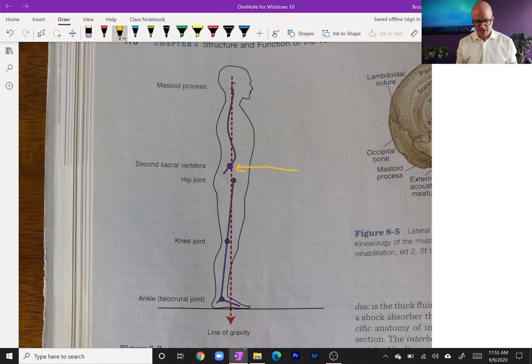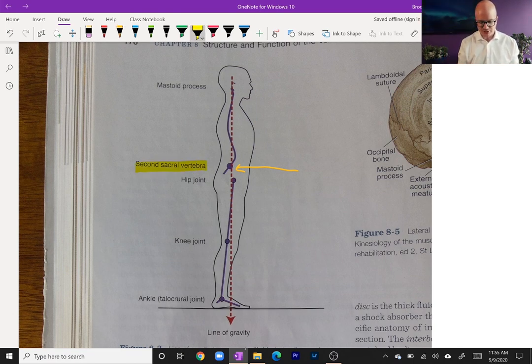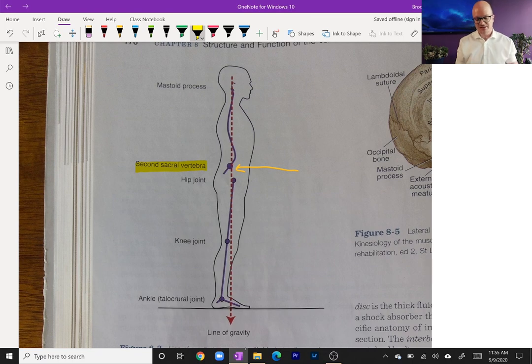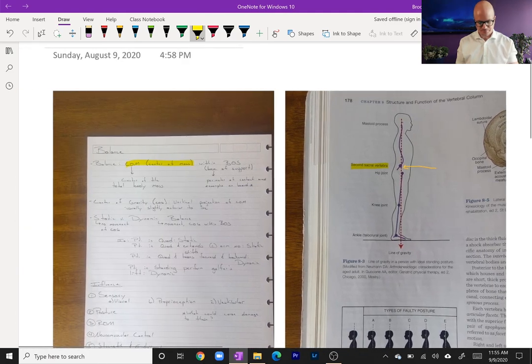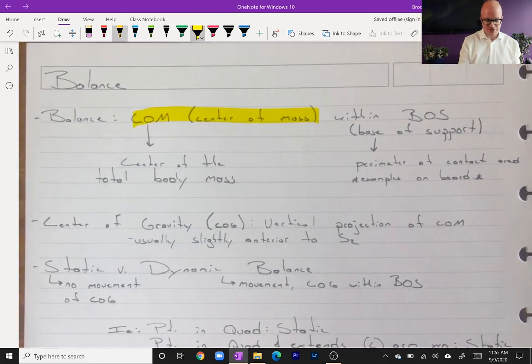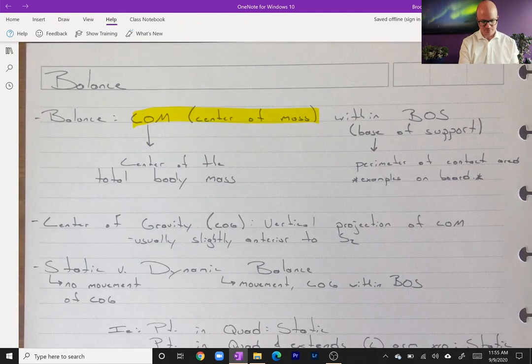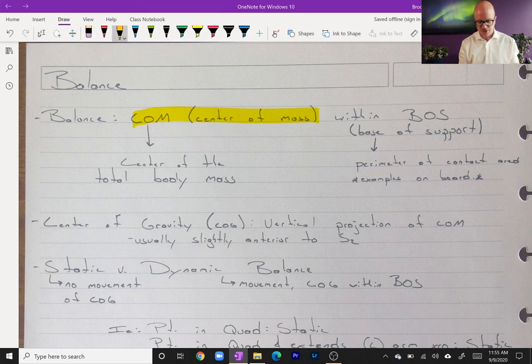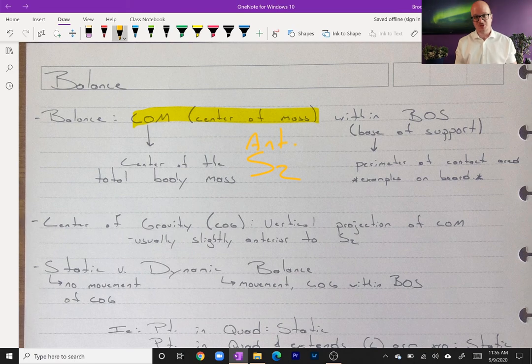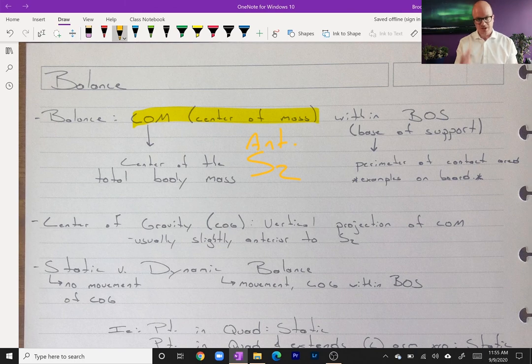So let's go back and look at our plumb line over here. I want to point out right here the second sacral vertebrae. The plumb line or line of gravity falls directly anterior to the second sacral vertebrae. That is our center of mass or center of gravity. That will change. Say someone's had an amputation—that's going to significantly change the center of mass for that person.